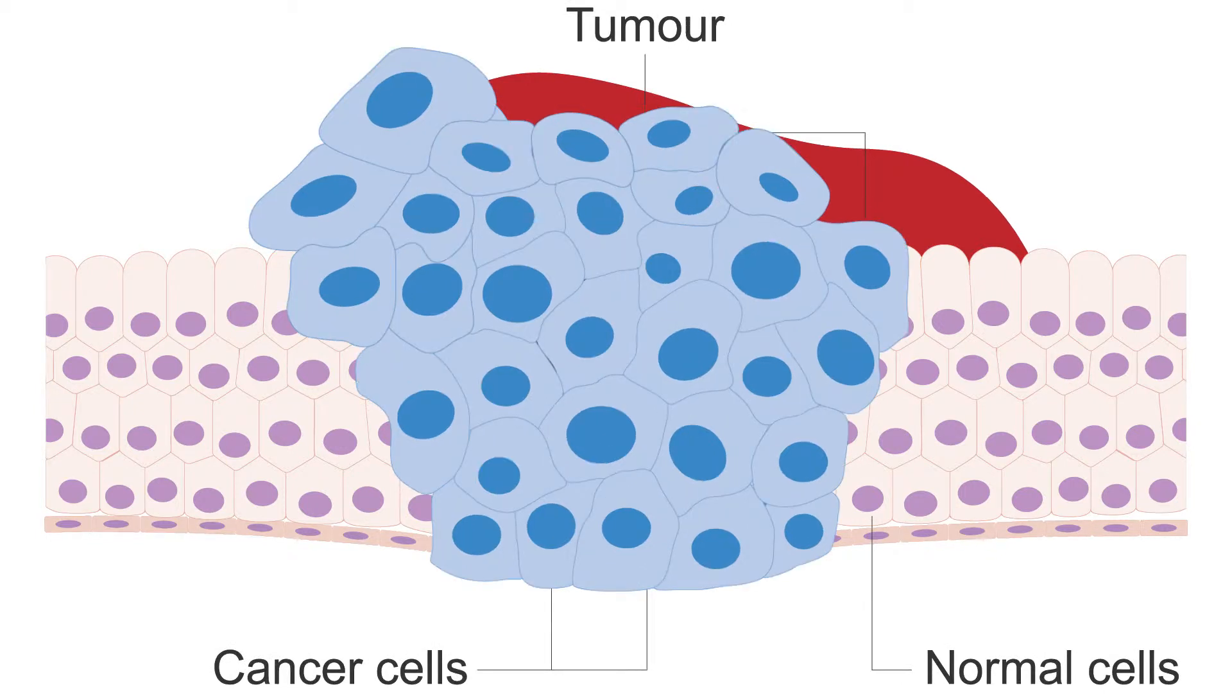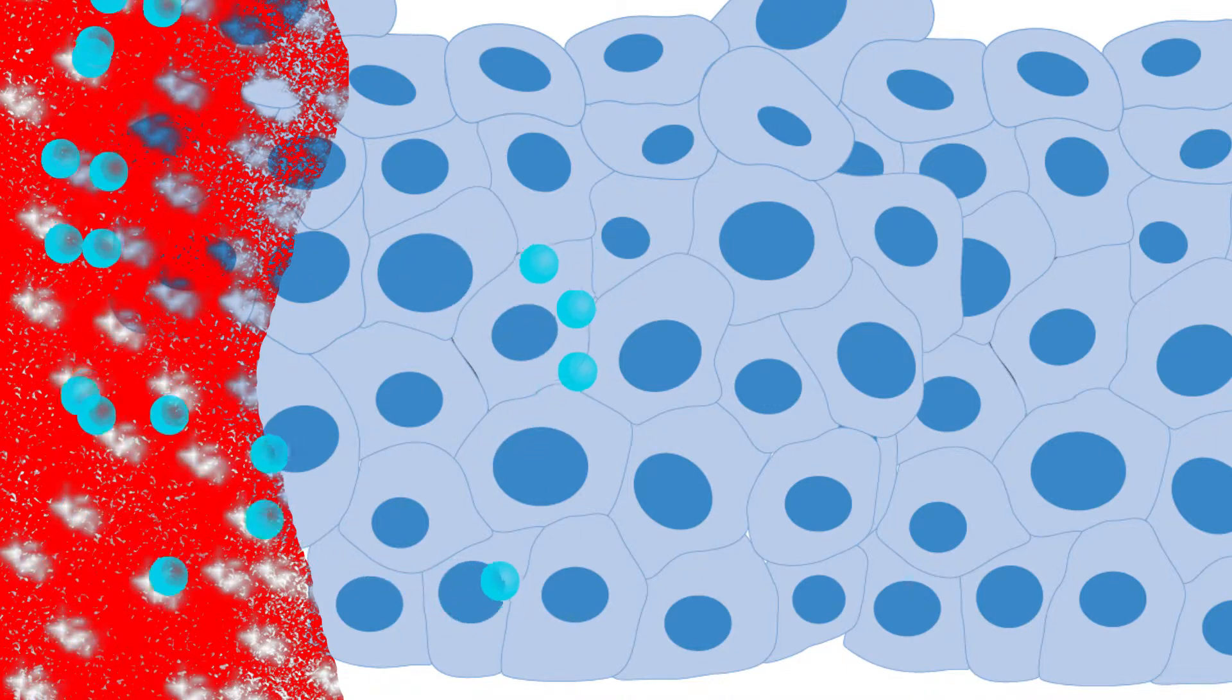In some tumors, the only way to deliver nanoparticles will be through diffusion or extravasation, a process of leaving the vasculature. This whole process is sometimes called the enhanced permeability and retention effect.